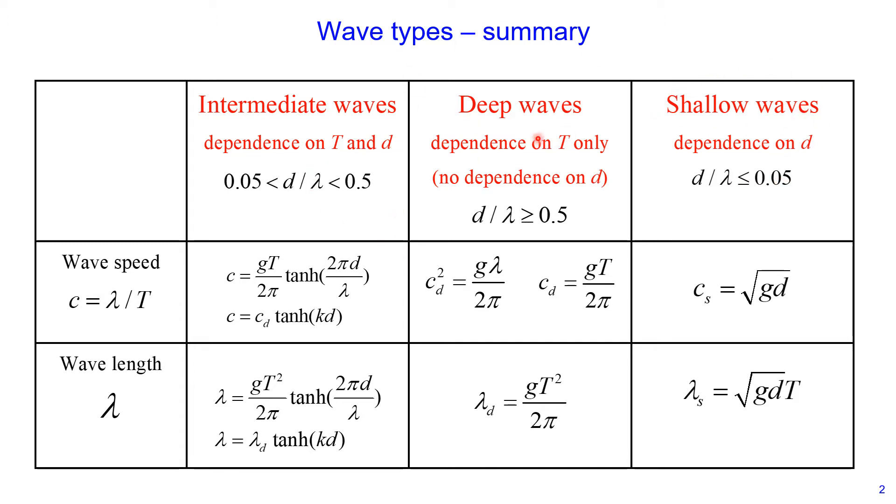For deep waves we have dependence on wave period only, no dependence on water depth. For shallow waves we have dependence on water depth. And it's only for intermediate waves we have dependence on both wave period and water depth, for wave speed and wavelength. And these are my equations for wave speed and these are my equations for wavelength.